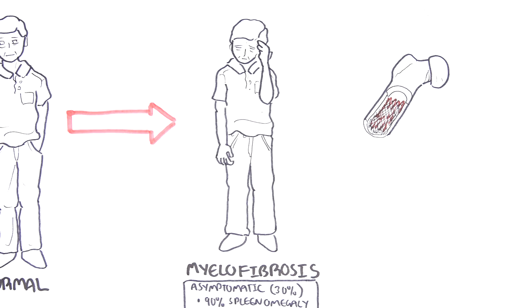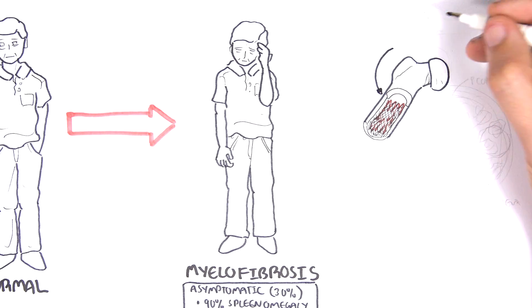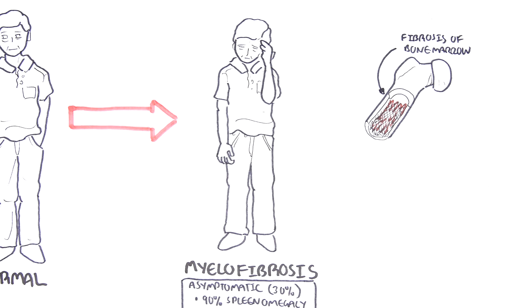And we will see why this happens as we go along in the video. In myelofibrosis, what we see is fibrosis occurring in the bone marrow, the area where hematopoietic stem cells usually differentiate and become our blood cells.